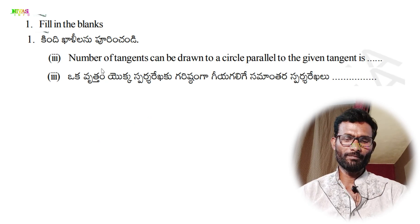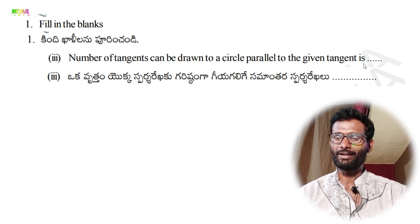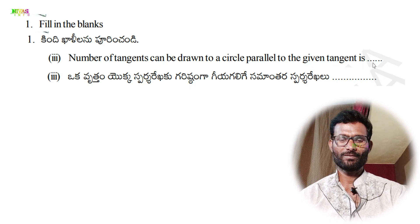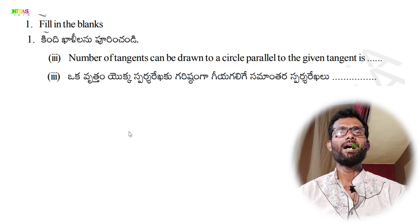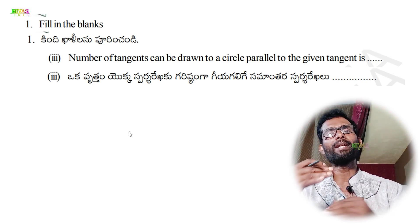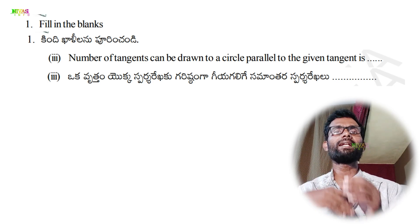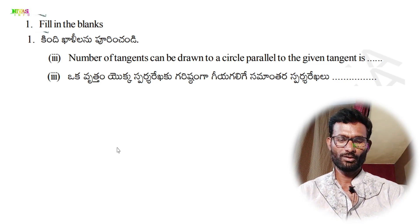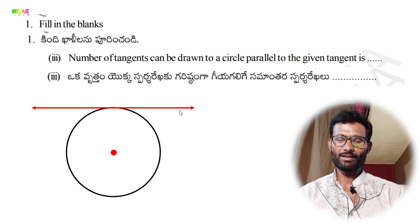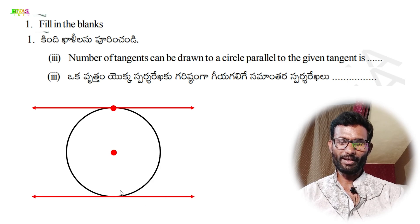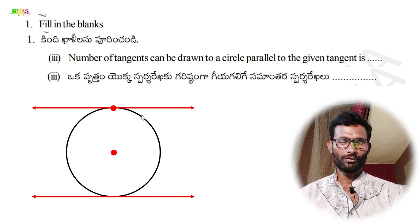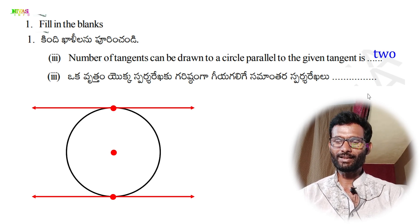Third problem: the number of tangents that can be drawn to a circle parallel to a given tangent is how many? We draw a circle and parallel tangents on either side. The answer is 2.